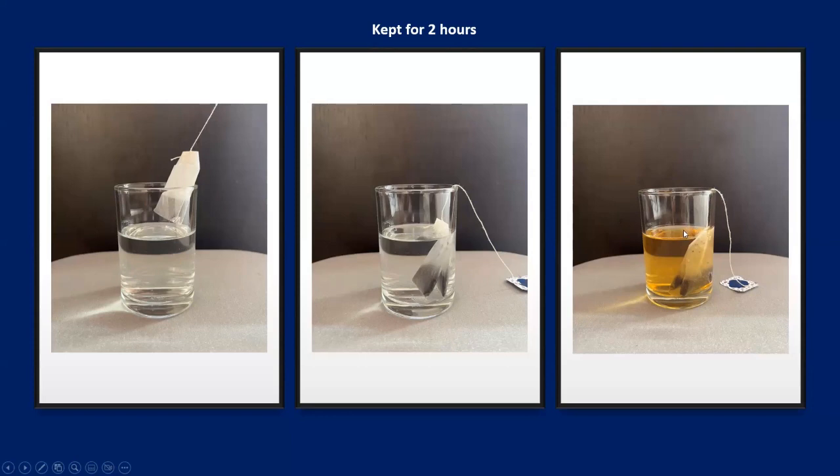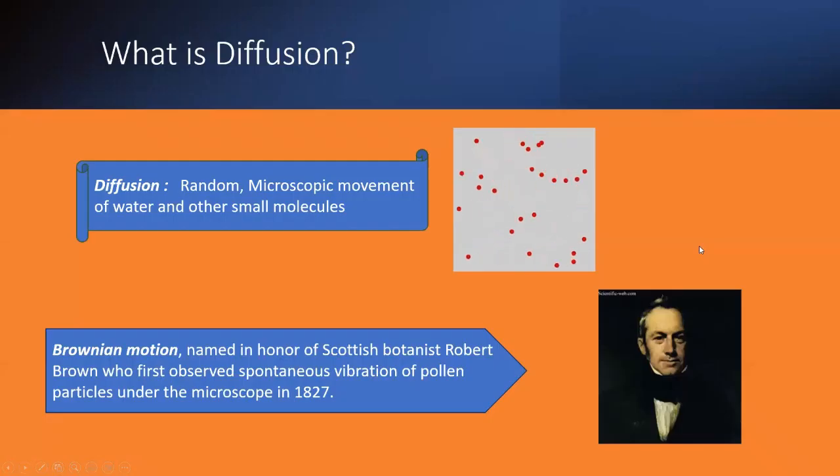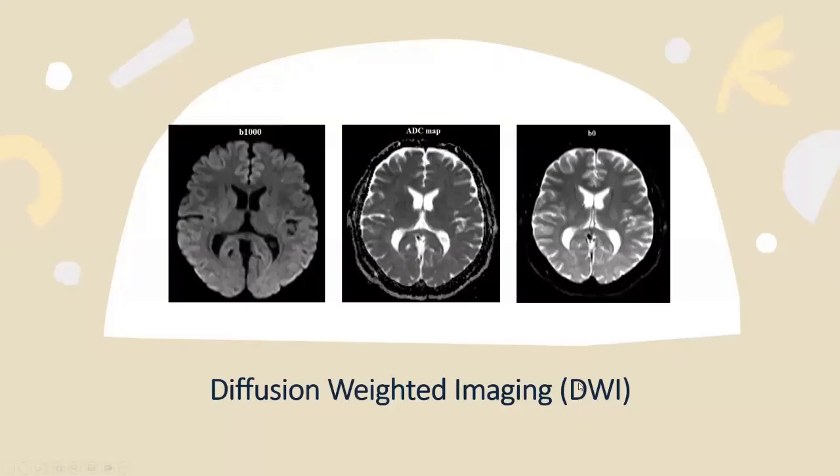This means there is some molecular motion always present in water. Because of this tiny motion, particles from tea leaves transfers to water. However, the same movement is present in all tissues. This is called Brownian motion. In summary, we can define diffusion as random microscopic movement of water and other molecules. As I told before, this is present in all living tissues. So, this motion is also called Brownian motion, which is firstly observed by English scientist Robert Brown in 1827.